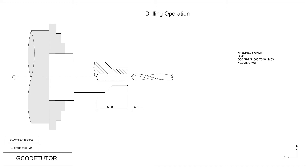X0 takes our tool down to the centreline of the component — as is standard on all lathes, the centreline is known as X0. The Z position, Z5, brings us 5mm off the datum position. We set the datum position in the machine using G54, so the machine knows the end of the component is at Z0, bringing us 5mm off the face of the job. The machine will move to these coordinates using the rapid travel command G00 already defined in the line above.